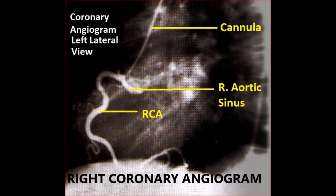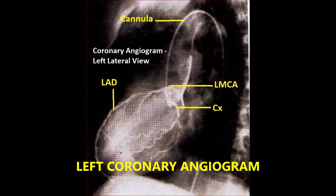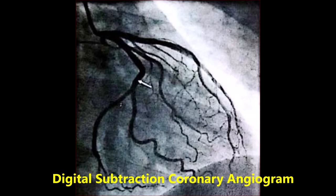This is the right coronary angiogram showing the RCA, the RPCA, and the posterior descending artery. And this is the left coronary angiogram showing the LAD, diagonal branches, and the circumflex. Finally, this is a digital subtraction coronary angiogram showing the LAD and the circumflex.